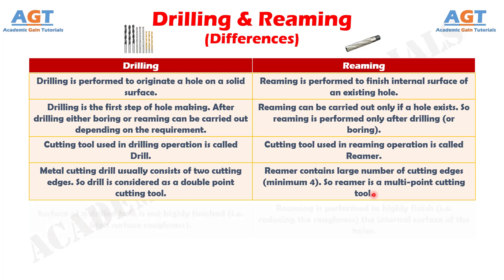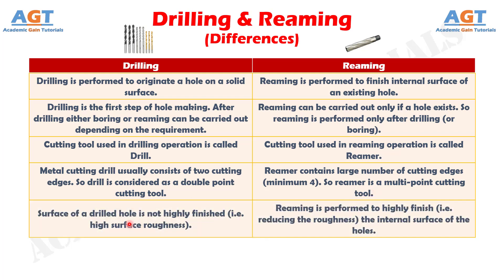Number five: the surface of a drilled hole is not highly finished — that is, it has high surface roughness — whereas reaming is performed to highly finish, that is, reduce the roughness of, the internal surface of the holes.